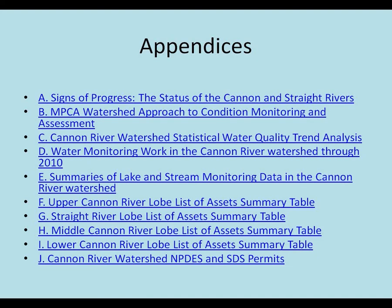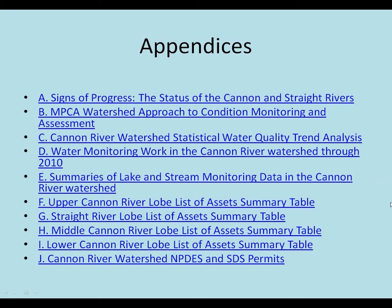And then lastly, there are a lot of appendices that go along with the document. The signs of progress document is there, the monitoring work summaries, and those lists of assets summary tables. There is a list of the point source permitted dischargers within the watershed, although I don't think any of those actually made it into the priorities for upcoming work — maybe a little bit with stormwater, and stormwater is worked into some of these sections as well.